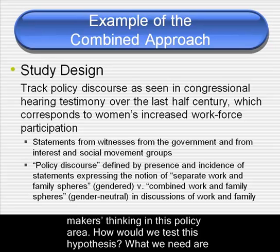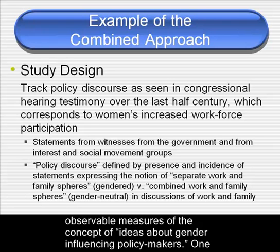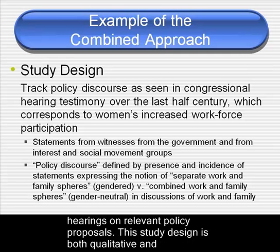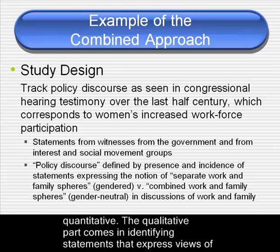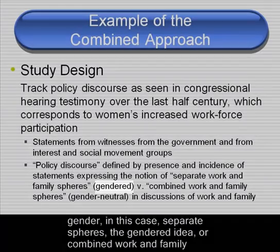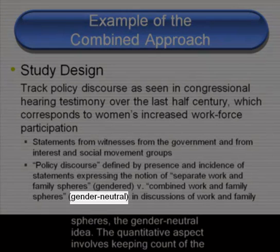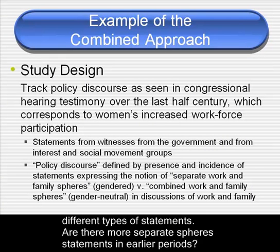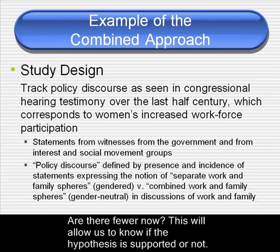How can we test this hypothesis? What we need are observable or empirical measures of the concept of ideas about gender influencing policy makers. One possibility is to look at statements from policy makers and others made during congressional hearings on relevant policy proposals. This study design is both qualitative and quantitative. The qualitative part comes in identifying statements that express views of gender — in this case, separate spheres, the gendered idea, or combined work and family spheres, the gender-neutral idea. The quantitative aspect involves keeping count of the different types of statements. Are there more separate sphere statements in earlier periods? Are there fewer now? This will allow us to know if the hypothesis is supported or not.